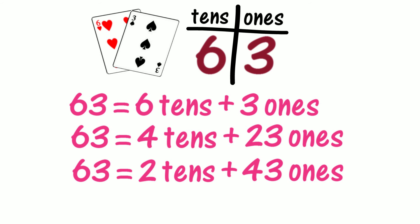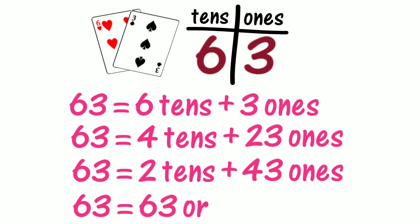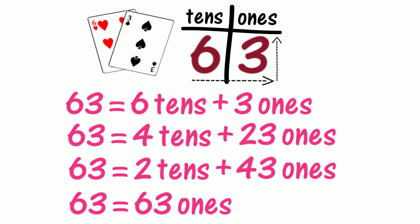Let's imagine now that we're seeing the whole sixty-three as ones. How many ones will we have? Will we have sixty-three ones? Could we describe 63 using non-standard place value as sixty-three ones? Can we read across the place value chart to see 63 as sixty-three ones? Did we describe 63 using non-standard place value in more than one way?